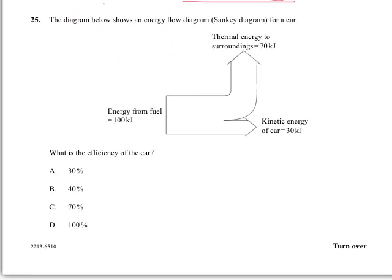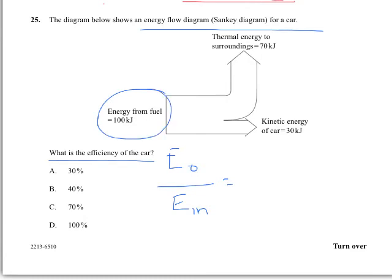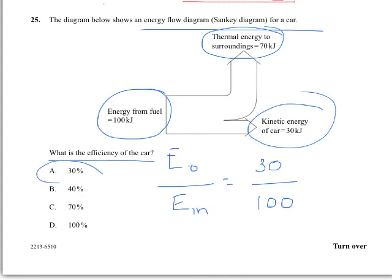Question 25. We have an energy flow diagram, and it's asking us about efficiency. So if we think back to our formula for efficiency, you have energy out, useful energy out, over the energy in. So if we think of a car, we put fuel in. We don't want thermal energy, that's useless, we want kinetic energy. So we're talking about 30 over 100, which would give us 0.3, but then times 100 would give us 30%. So the answer is A.